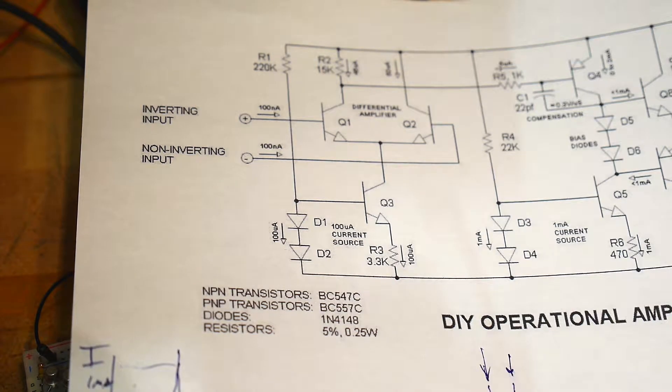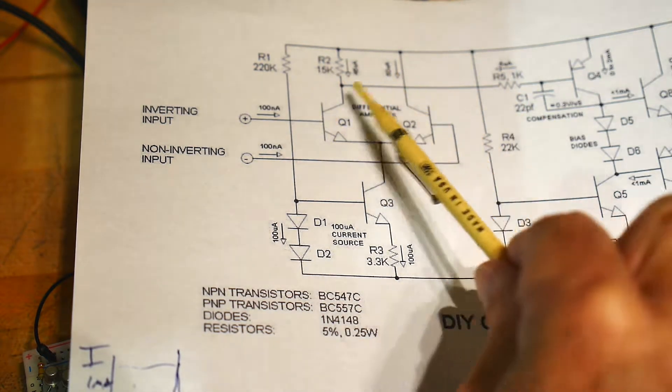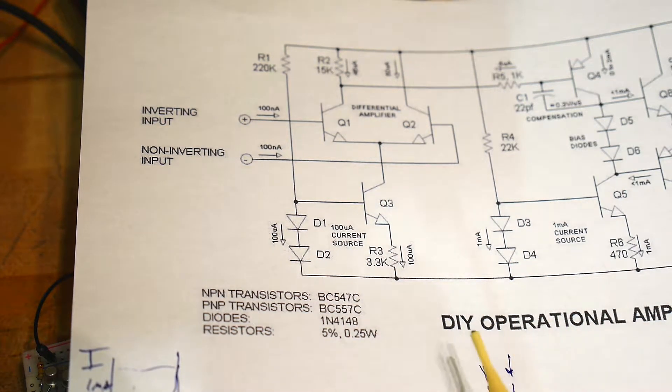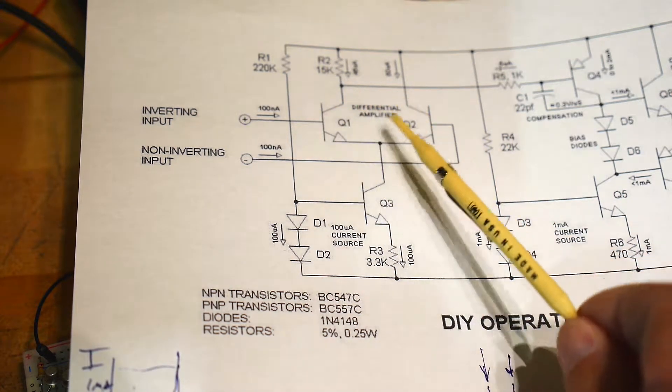So we had an offset in the output, and I had surmised that was due to a mismatch between the transistors. We tried to match them, so I went and read up on the website that I got this schematic off of, the DIY operational amplifier, and he also suggests matching these two transistors.